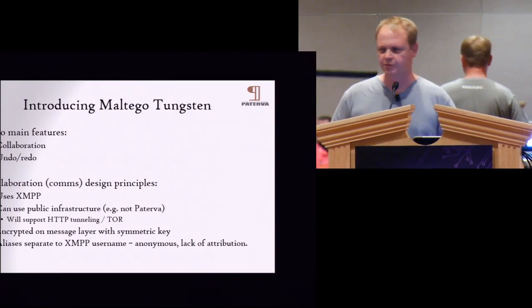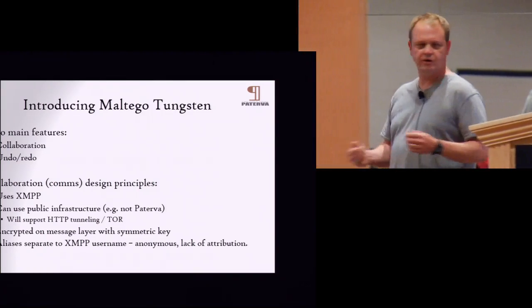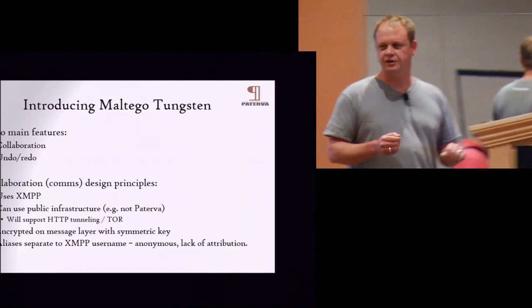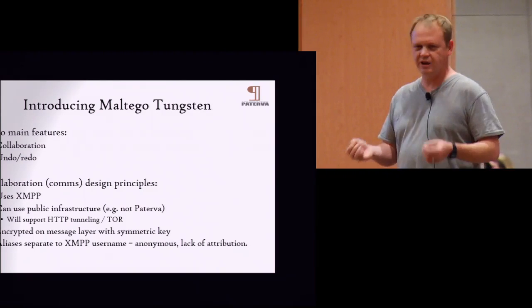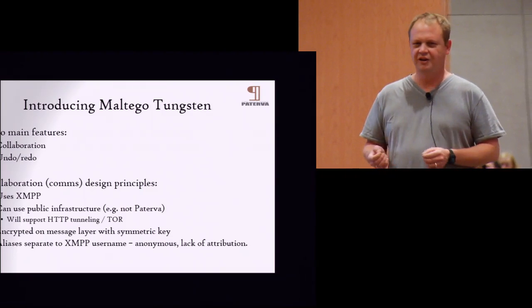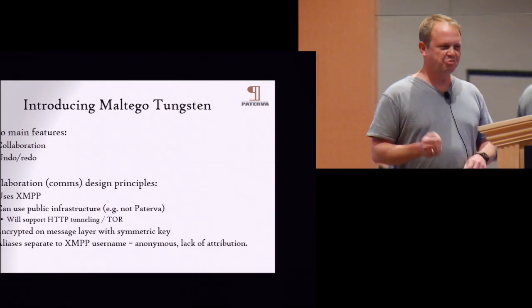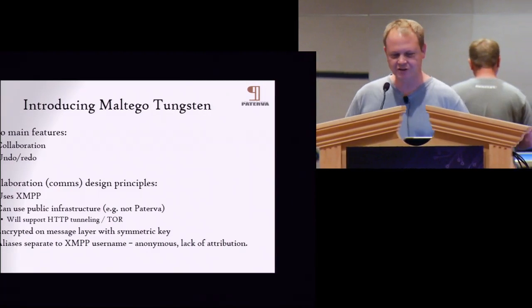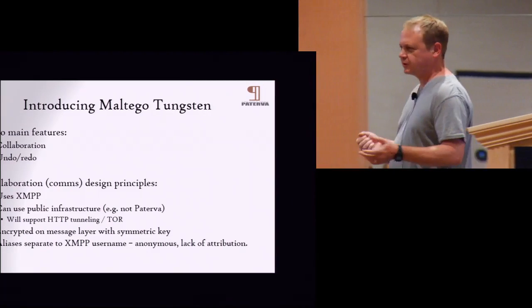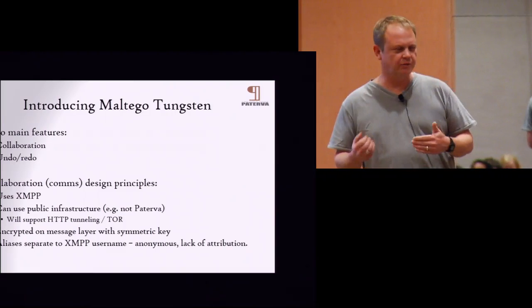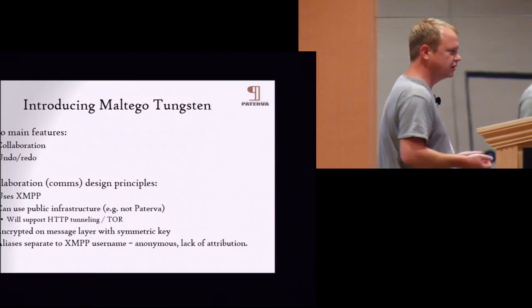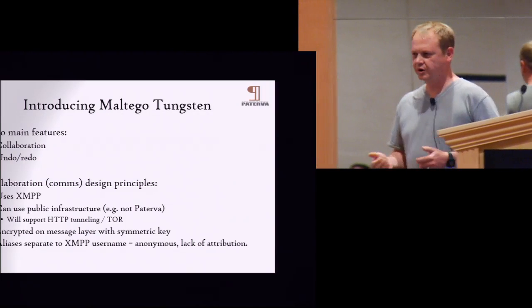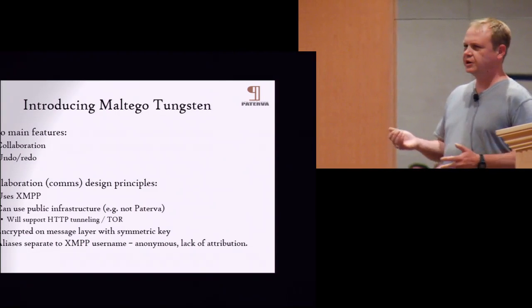The collaboration feature allows real-time collaboration between graphs and people. And the second big feature — finally — we have undo and redo, which I know sounds silly but it's a major big deal. The communication design for collaboration uses XMPP — that's a standard protocol, everybody knows how it works, it's pretty robust. We wanted to also be in a situation where we could use public infrastructure, so it doesn't necessarily go through our servers — it could go through Jabber.de, GChat, any of those servers.